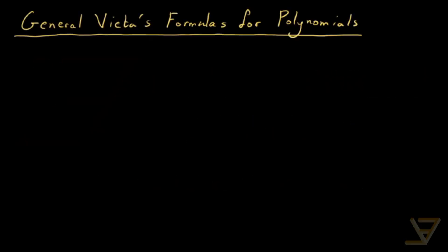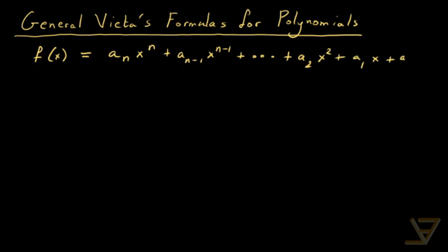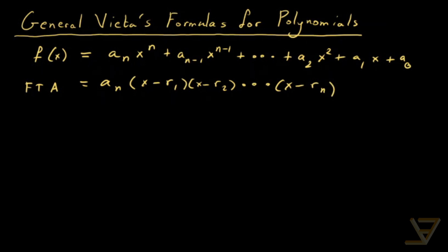Hi everyone. Let's talk about Vieta's formulas for polynomials. Let's say we have a polynomial f(x) with complex or real coefficients that equals a_n x^n plus a_{n-1} x^{n-1}, all the way through to a_2 x^2 plus a_1 x plus a_0. By the fundamental theorem of algebra, we know that this factors with the coefficient a_n out front, times (x - r_1)(x - r_2) all the way through to (x - r_n). There is a unique factorization up to rearrangement of factors, and we call r_1, r_2, through r_n the roots.